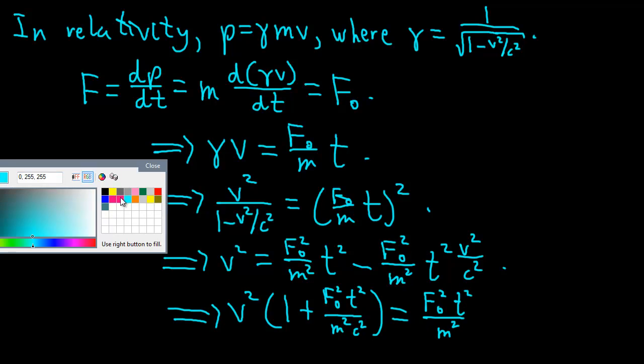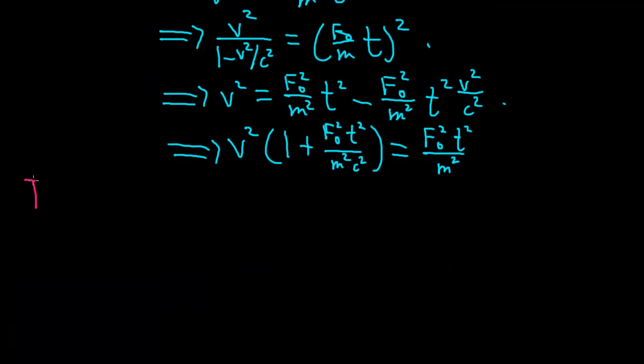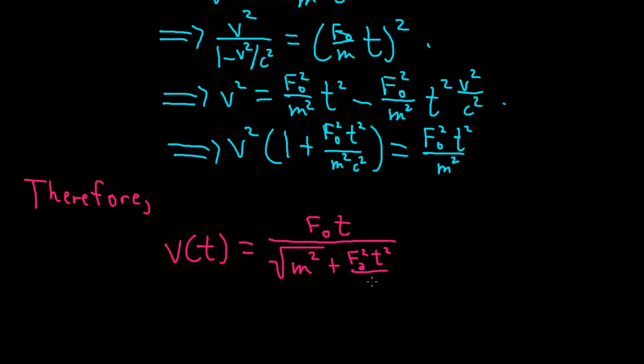To solve for v, we move this over and factor out v squared. We get v squared times 1 plus F0 squared t squared over m squared c squared equals F0 squared t squared over m squared. Therefore, the velocity as a function of time is v of t equals F0 t over the square root of m squared plus F0 squared t squared over c squared.